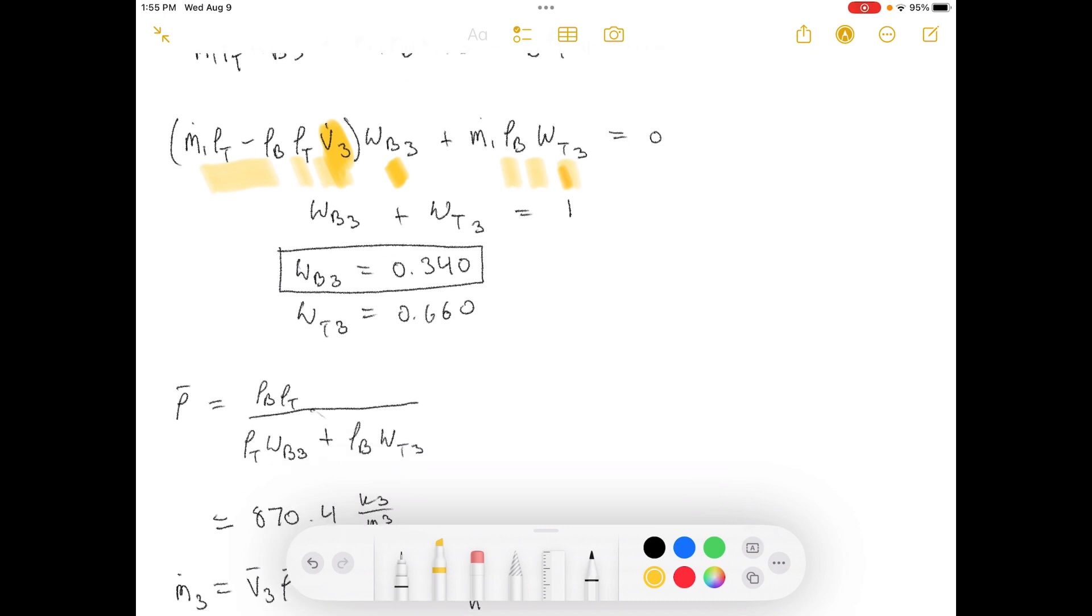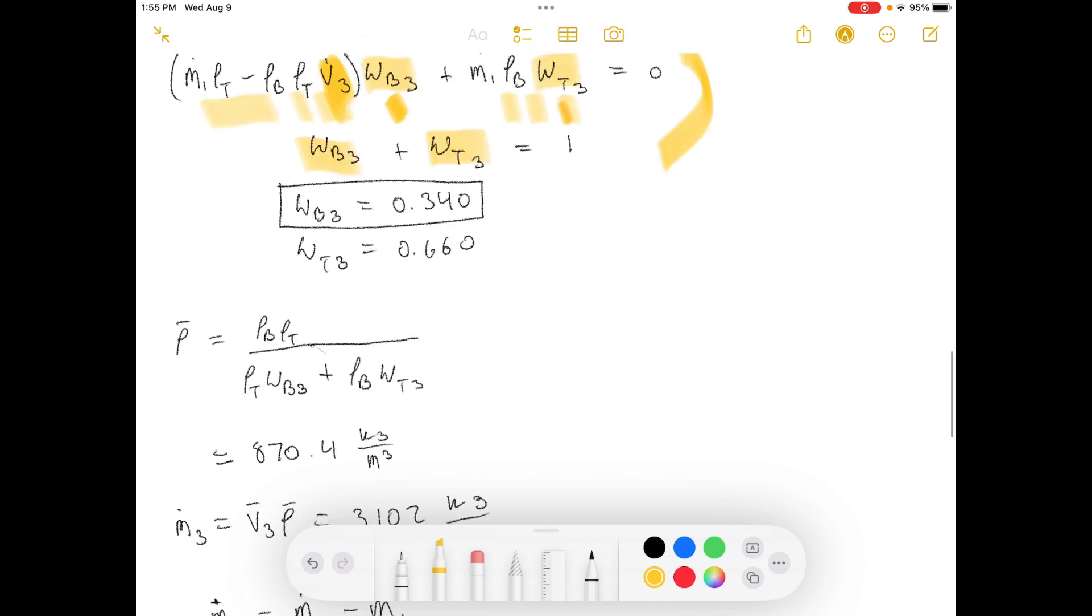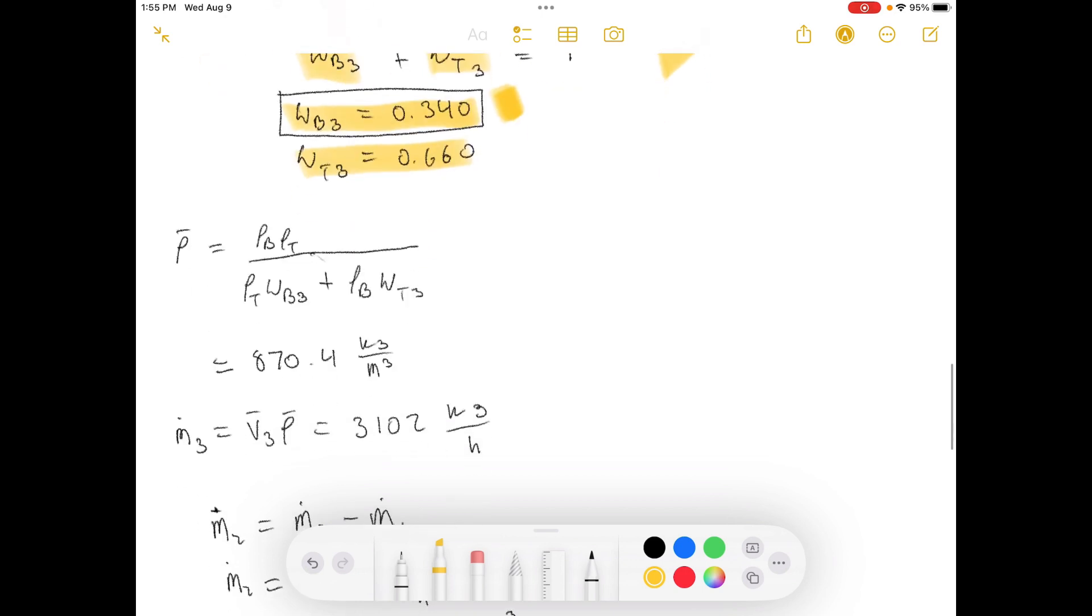So, we have everything in terms of our weight fractions. And then, we know these. So, this is a system of two equations, two unknowns right here. And so, then, we can solve for our weight fractions. This being the one that they asked us for. So, that's perfect. So, now, we move on to the next one.